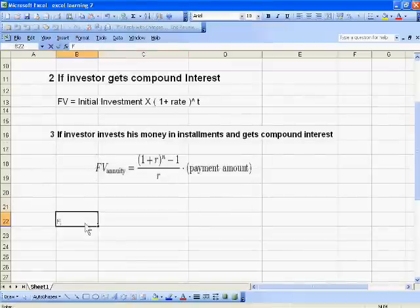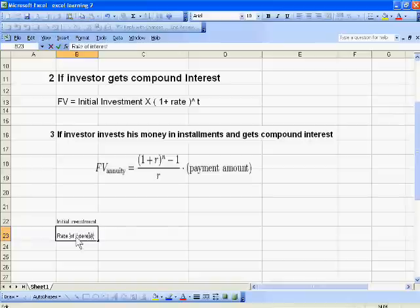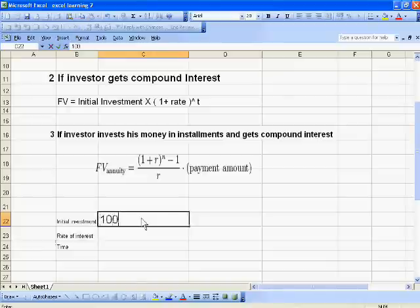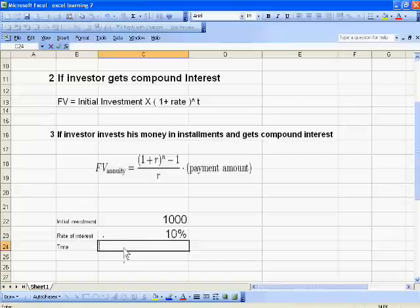This is FV, future value. Before calculating future value, I want to show some information. Initial investment is 1000, rate of interest is 10%, and time is 5 years.